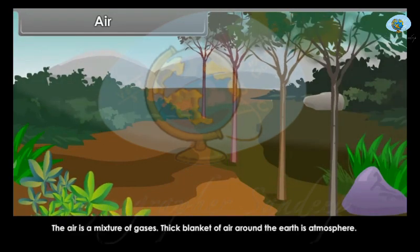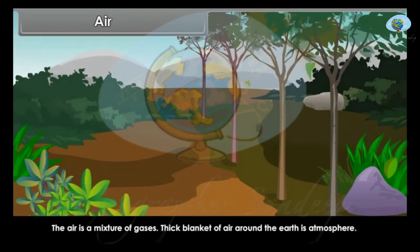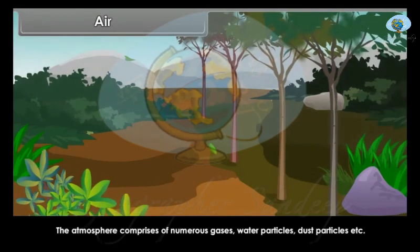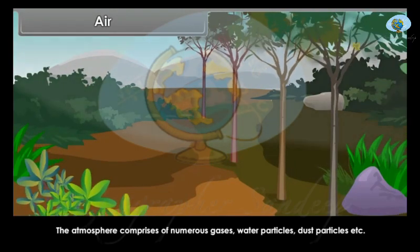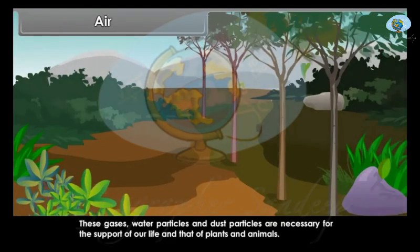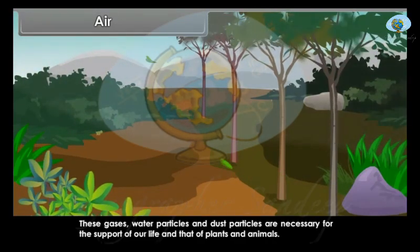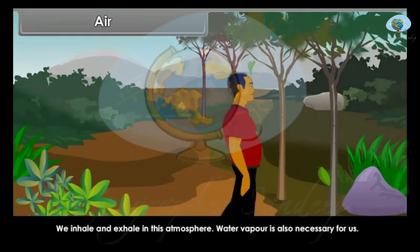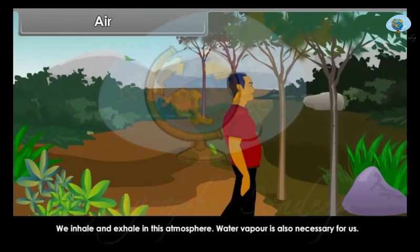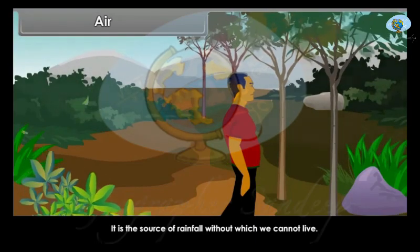The air is a mixture of gases. The thick blanket of air around the earth is called the atmosphere. The atmosphere comprises numerous gases, water particles, and dust particles. These gases, water particles and dust particles are necessary for the support of our life and that of plants and animals. We inhale and exhale in this atmosphere. Water vapour is also necessary for us — it is the source of rainfall, without which we cannot live.